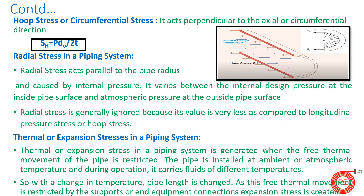Hoop stress, also known as circumferential stress, is another important stress acting along the body. Unlike longitudinal stress, which acts parallel to the piping axis, hoop stress acts perpendicular to the axial direction — in the circumferential direction. It is given by: S_H = P·D₀ / (2t), where P is internal pressure, D₀ is the outside diameter, and t is the pipe thickness. This stress also tries to deform the piping system.